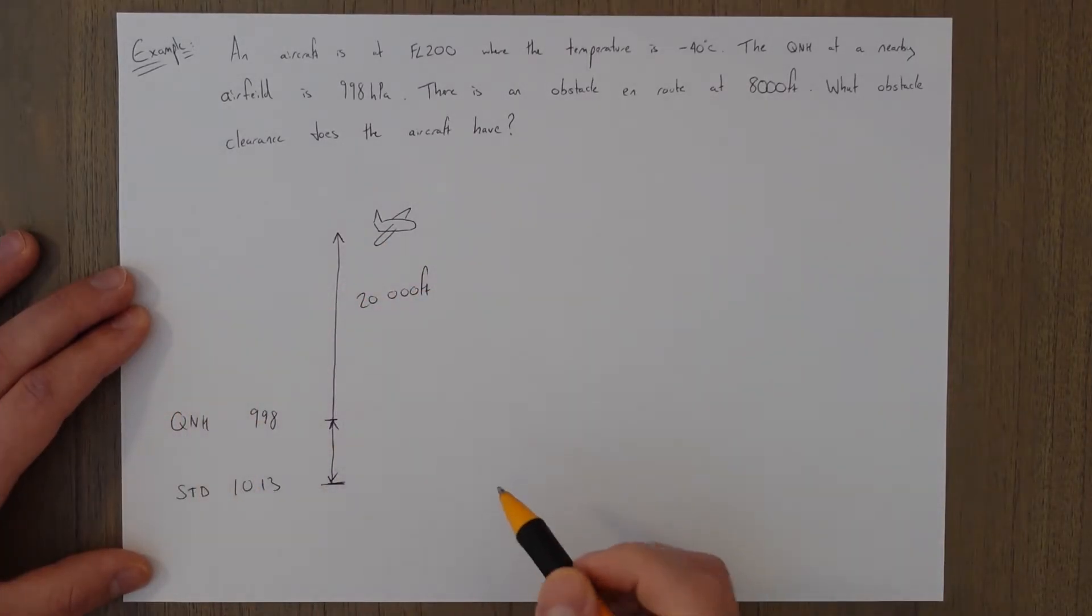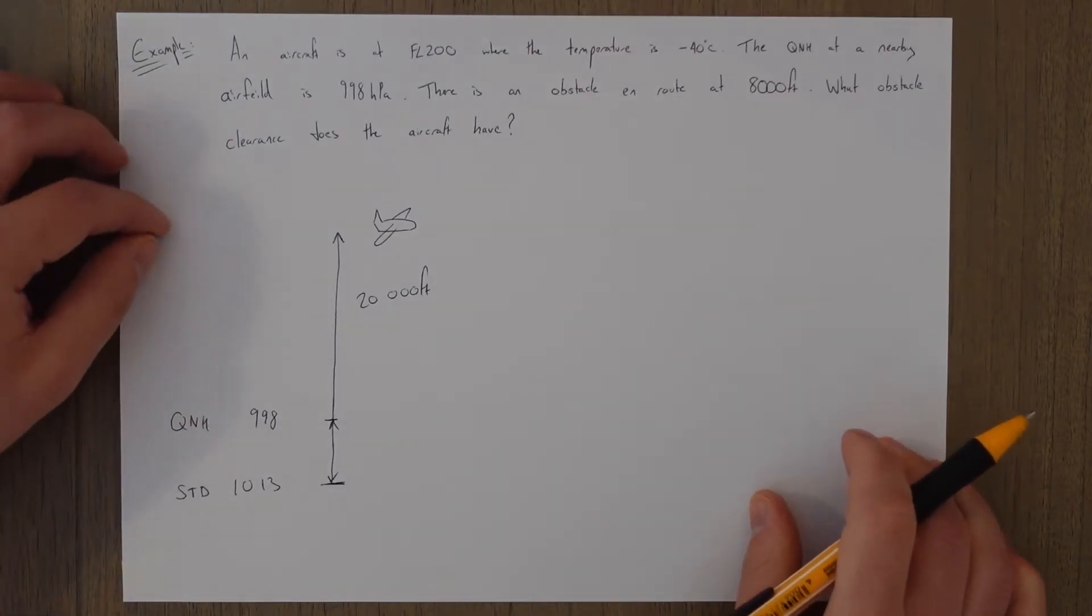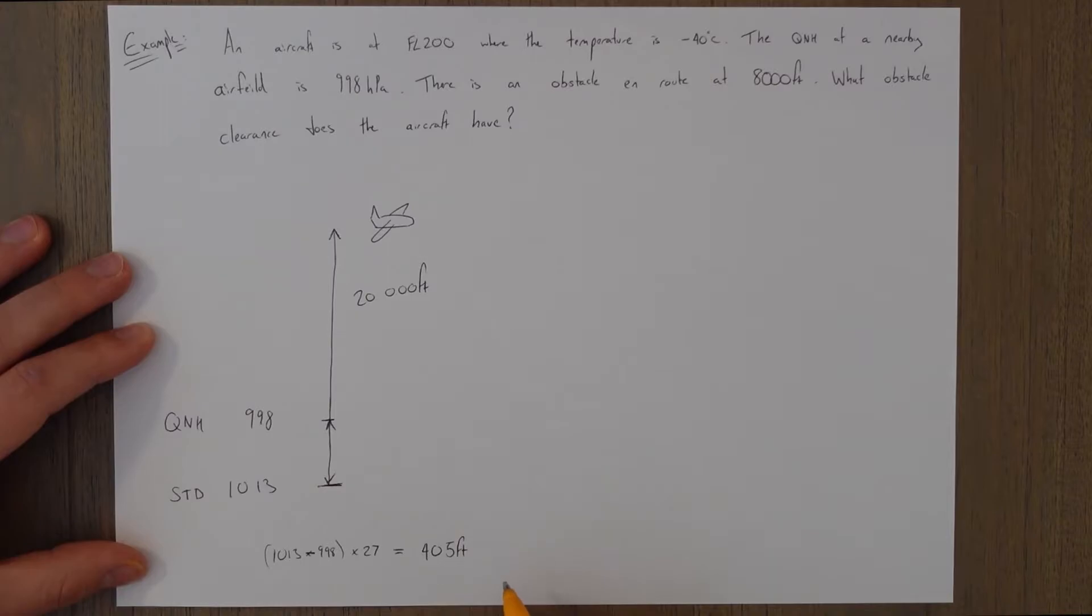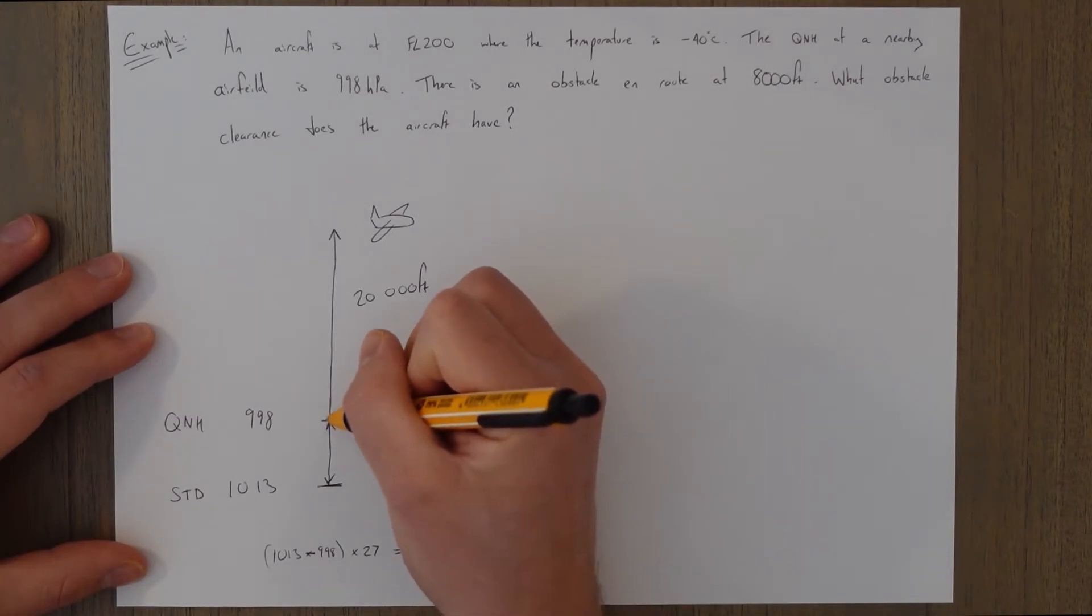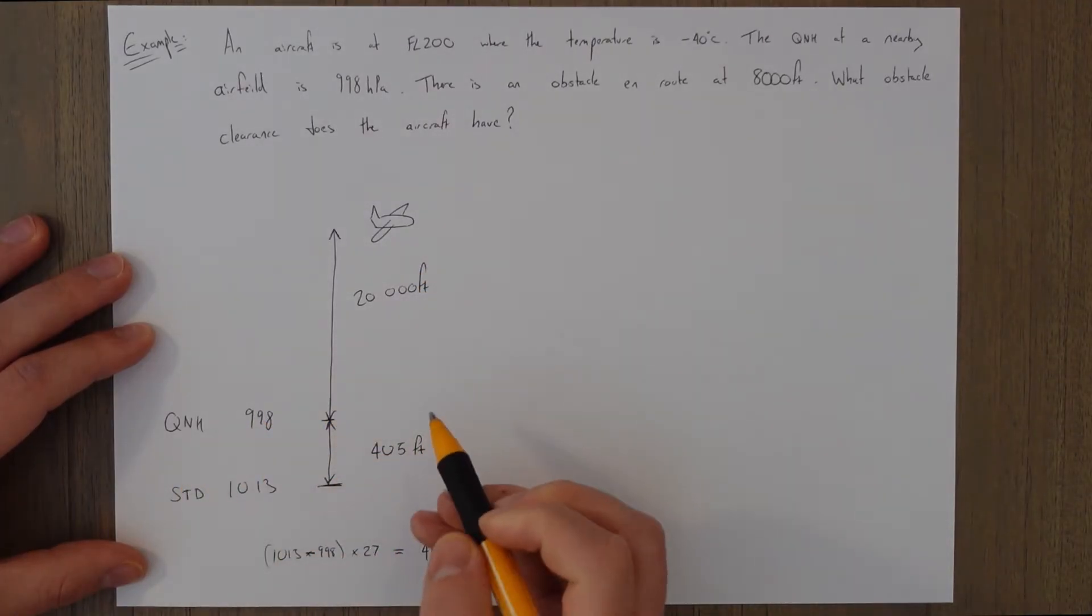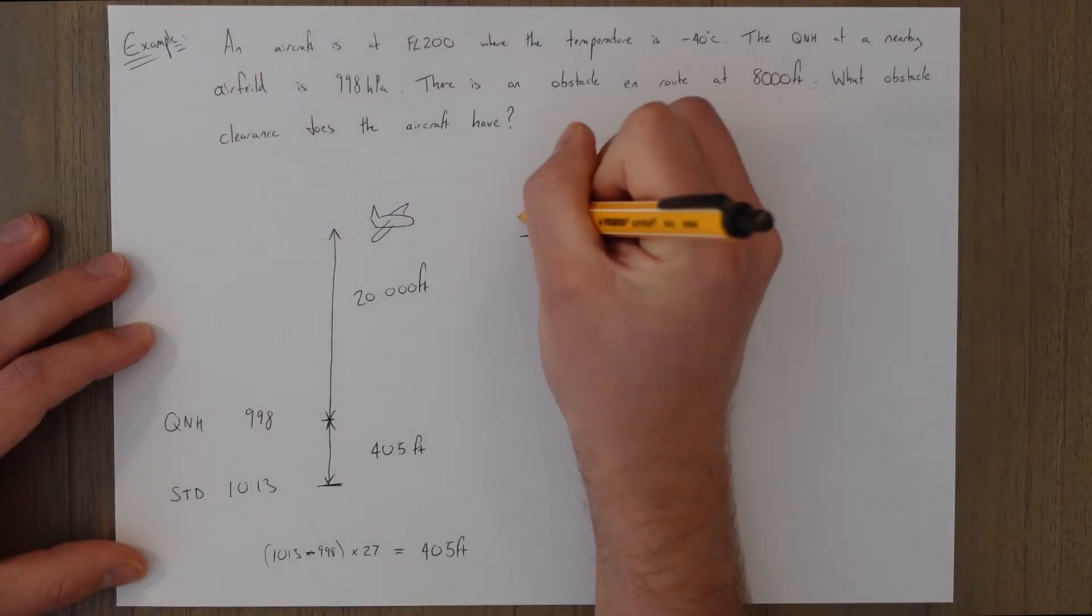This distance is very easy to calculate: 1013 minus 998 times 27, which is equal to 405 feet. So this distance in here is 405 feet, which means our indicated altitude, our height above the QNH, is going to be 20,000 minus 405. So our indicated altitude is equal to 19,595 feet.